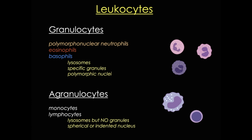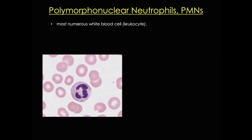I'll start with the most abundant of the circulating leukocytes, the polymorphonuclear neutrophil, usually just called a neutrophil, or sometimes a PMN for short. The PMN is a granulocyte, and as you may have guessed from its name, its granules are neutral in color, so none of them stain very well with the traditional blood stain, the Wright stain that you see here. Neutrophils make up about 50–60% of all the circulating leukocytes.